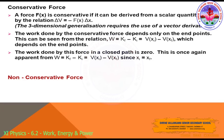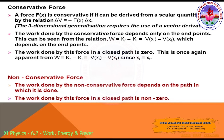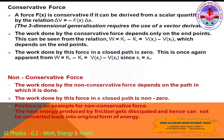The work done by a conservative force in a closed path is zero, which is apparent from W = Kf − Ki = V(xi) − V(xf). For non-conservative forces, the work done depends on the path taken, and the work done in a closed path is non-zero. Friction is an example of a non-conservative force — the heat energy produced by friction gets dissipated and cannot be converted back into the original form of energy.